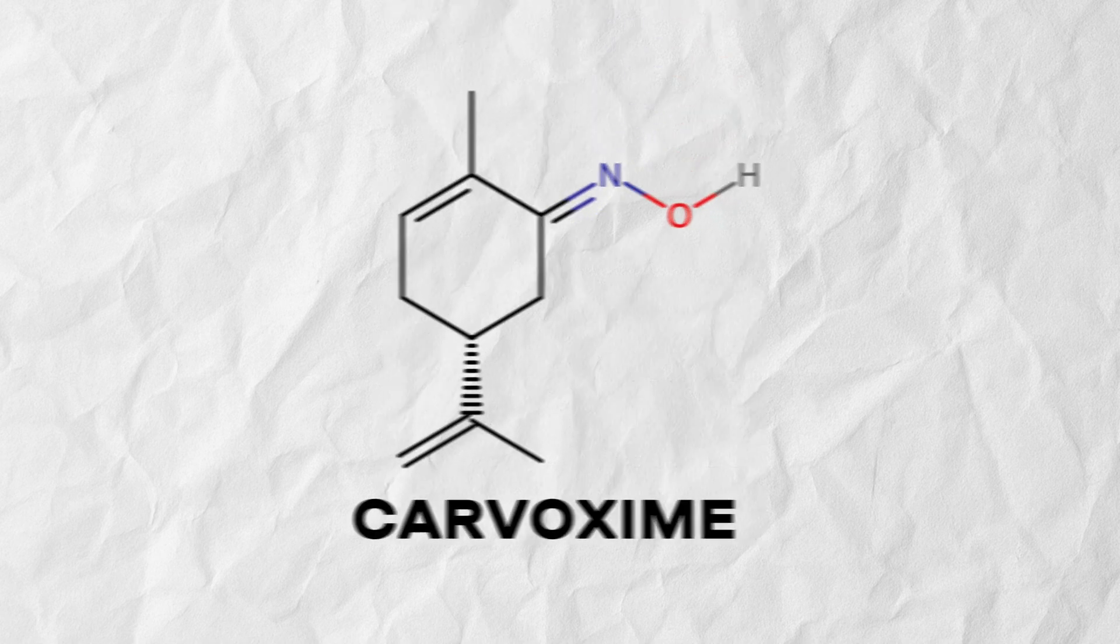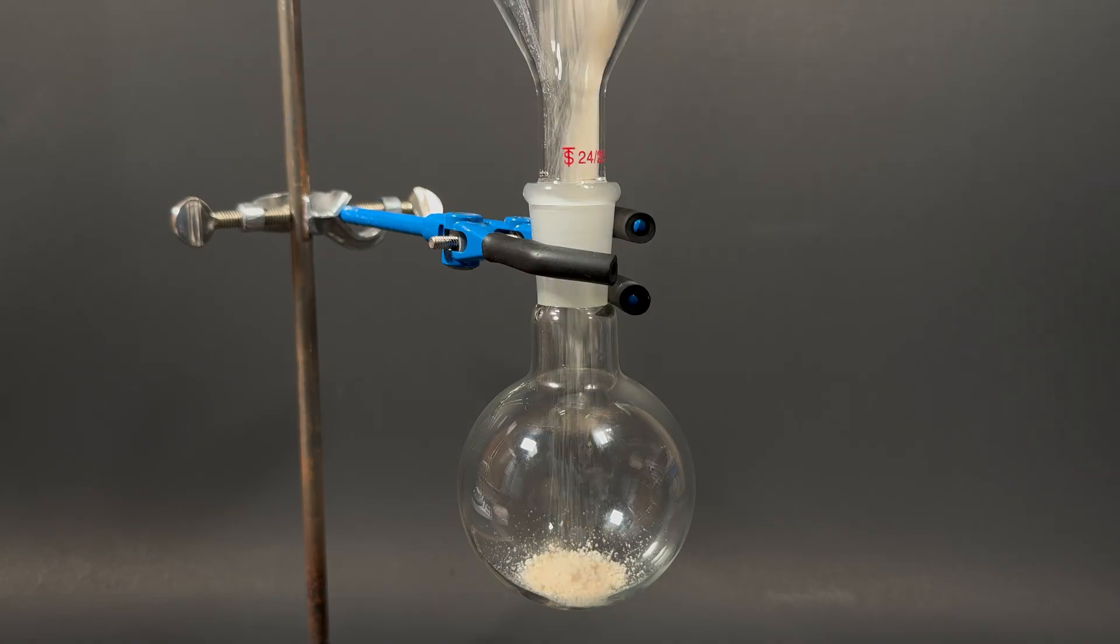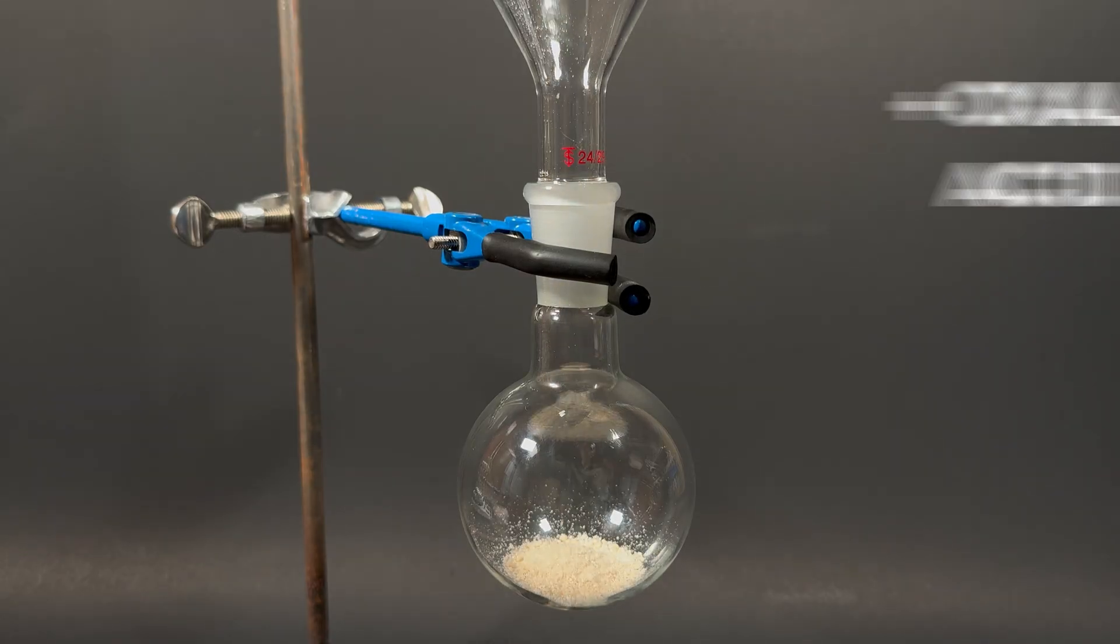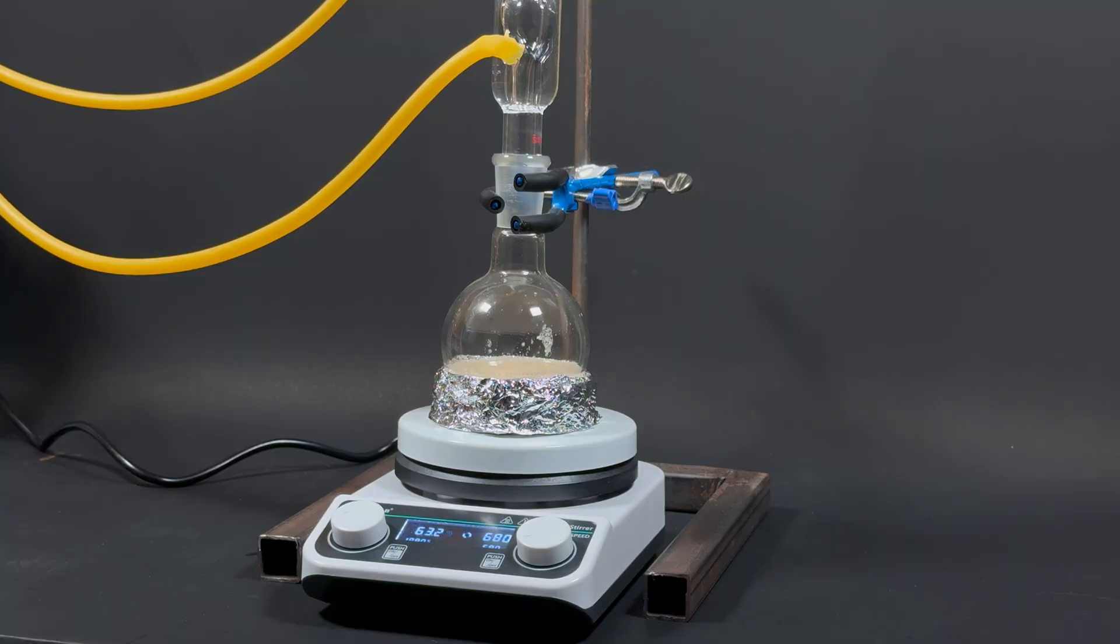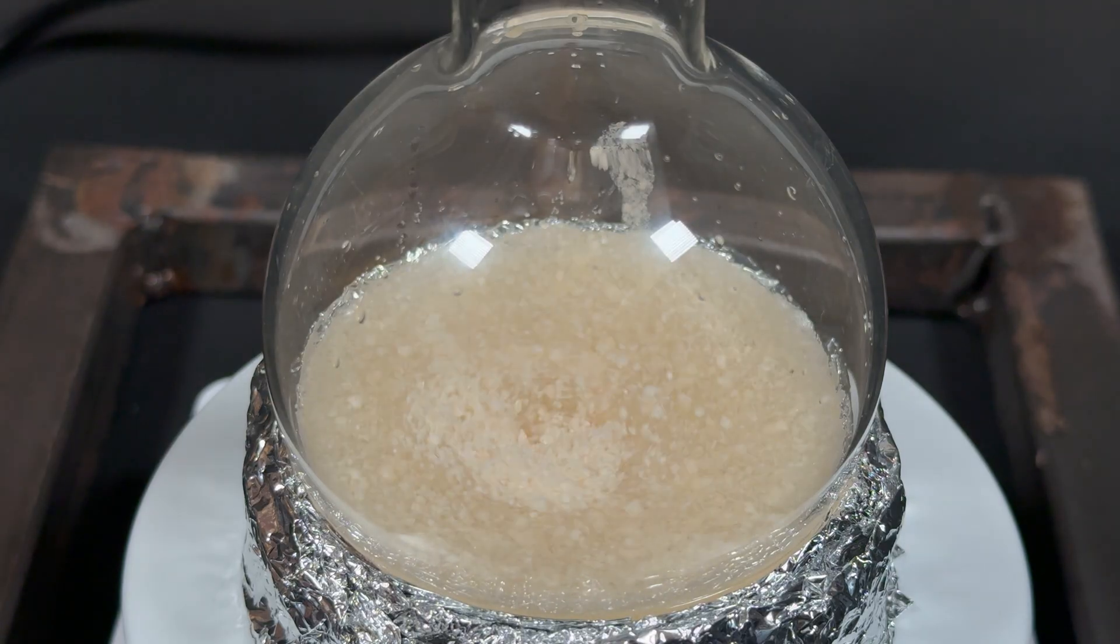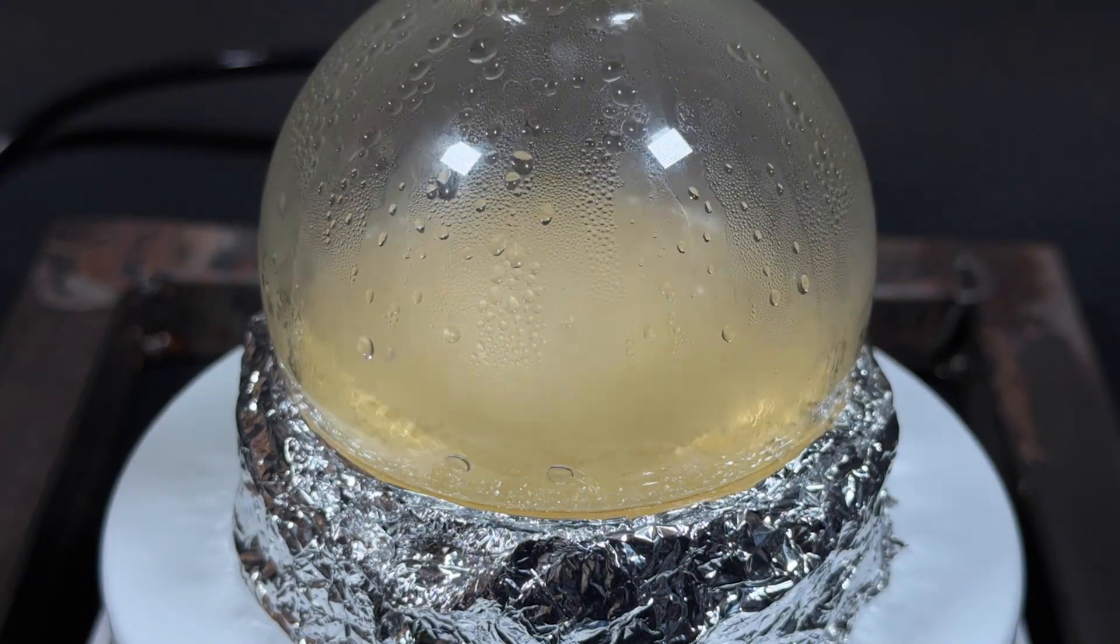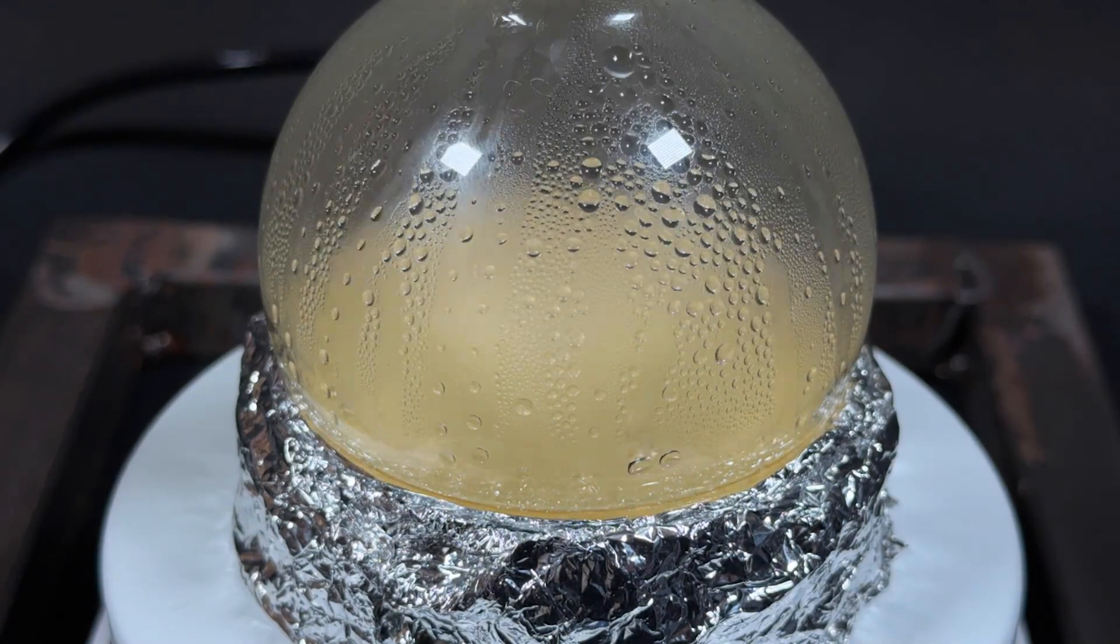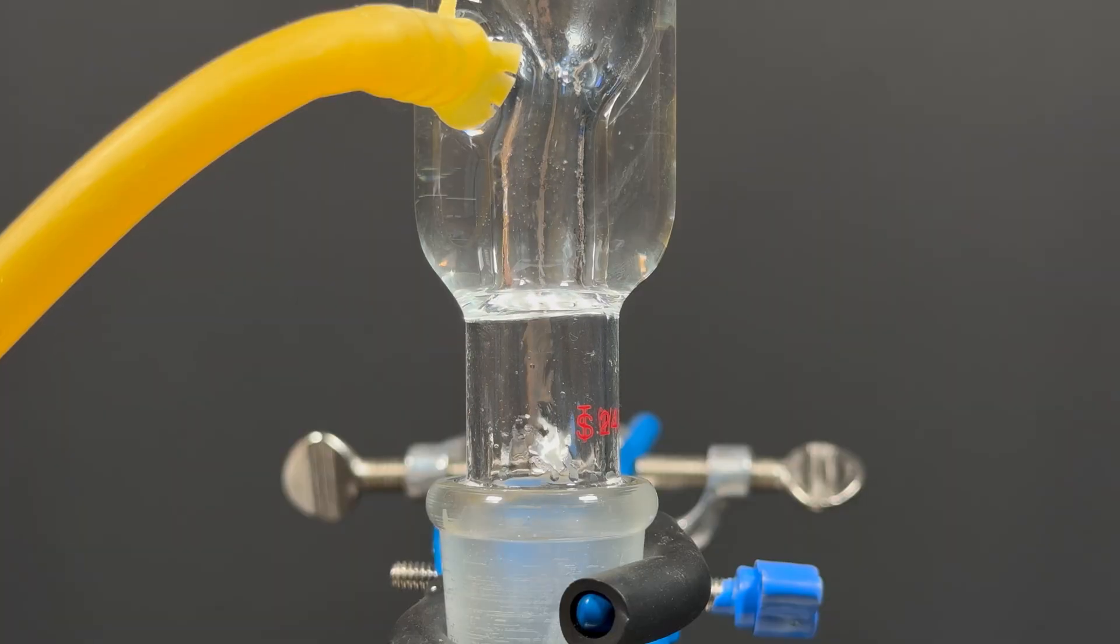And now, the final stage. It's simple. We need to turn carvoxime into the final minty aroma, L-carvone. I pour the powder into a flask and add oxalic acid and water. Put a condenser on the top and start heating. It needs to boil for an hour. After 10 minutes, everything dissolved. And something oily started floating. I was so happy to see those droplets and smell mint in the lab.